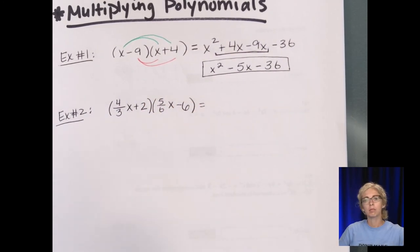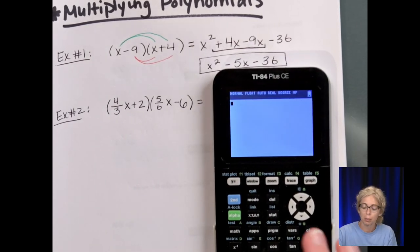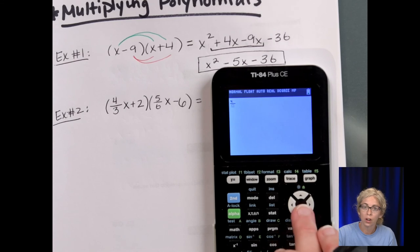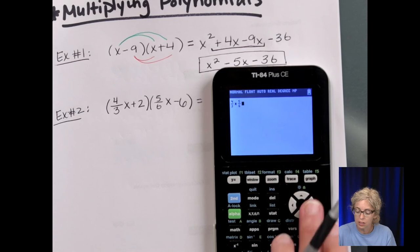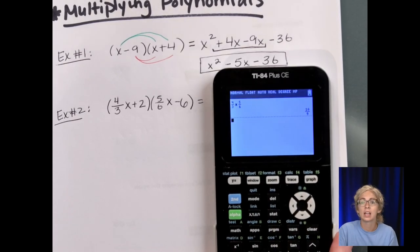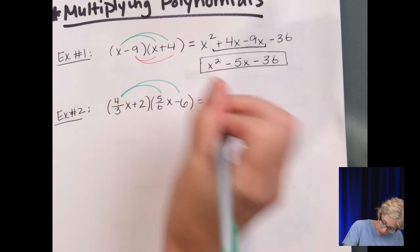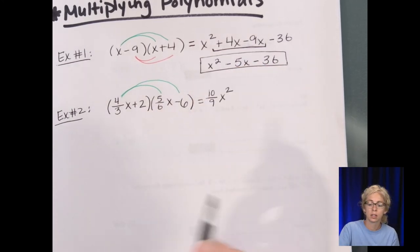It's very easy if you have your graphing calculator handy, as they multiply the fractions for us. Remember, you can do alpha y-equals to get to the numerator over denominator or fraction template. So I'm going to do 4/3 times 5/6, and this will give me the answer in simplified form. We get 10/9 as our answer. So 4/3 x times 5/6 x gives us 10/9 x squared, because x times x.